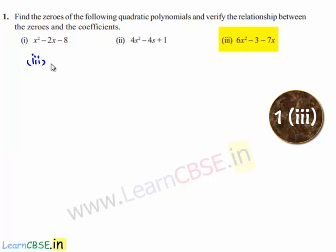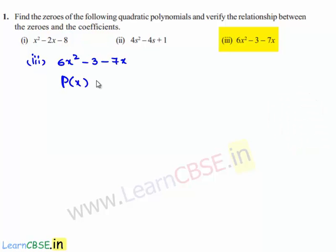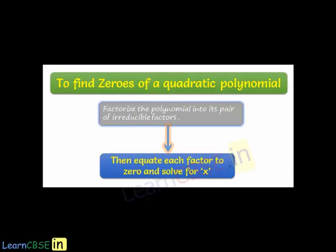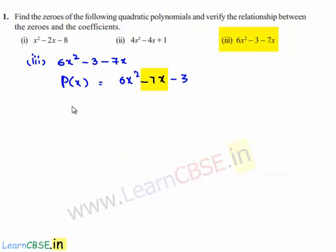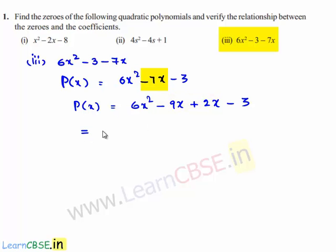Coming to the third bit, which is 6x² minus 3 minus 7x. Let P of x be a polynomial equal to 6x² minus 7x minus 3. This is by rearranging the given polynomial. In order to find the zeros of the given quadratic polynomial, we need to factorize it. P of x is equal to 6x² minus 9x plus 2x minus 3, by splitting of the middle term.